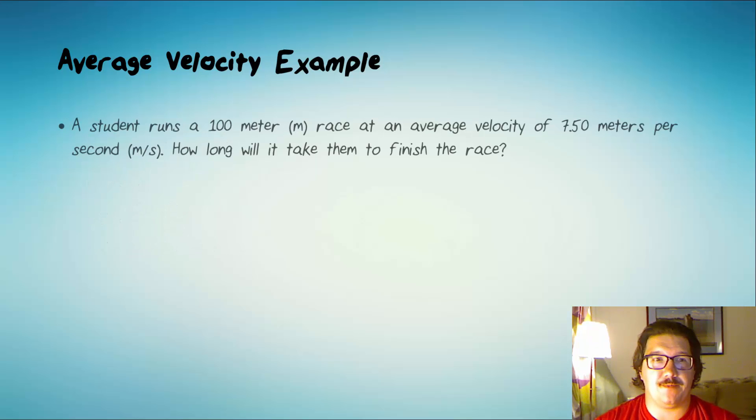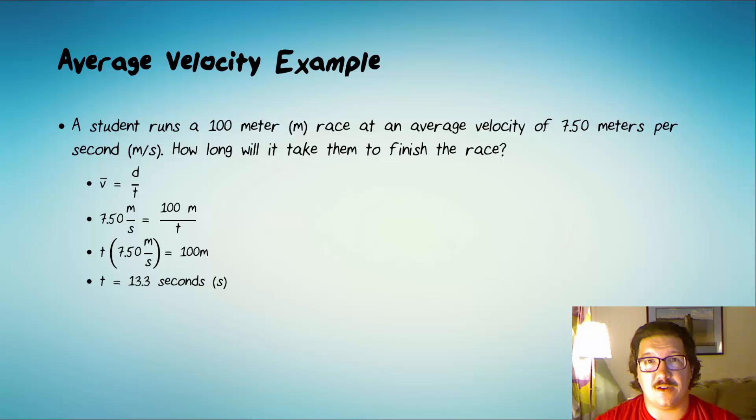Let's take a look at one more example. A student runs a 100-meter race at an average velocity of 7.5 meters per second. How long will it take them to finish the race? Well, we can use the same equation, and we can substitute in our velocity and our distance. This time, we're solving for time, so we can say that we cross-multiply. We can say that we multiply both sides by T. Either way, we end up with T times 7.5 meters per second equals 100 meters. When we divide by 7.5 meters per second, we find out that the time it took the student to run the race is 13.3 seconds.